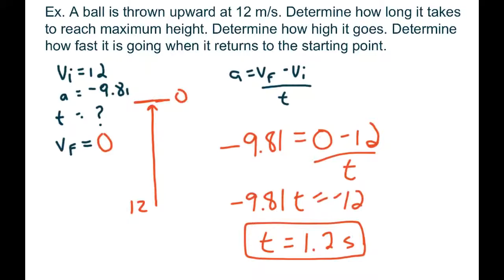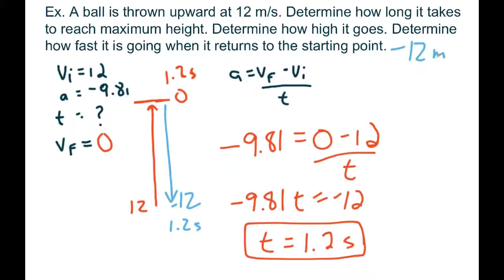If we figure out how much time it takes to fall back down, we'll get the exact same answer. The ball starts at 12 m/s, goes up, reaches a speed of 0 at the peak — that takes 1.2 seconds, which is exactly halfway through the trip. When it falls back, it starts at 0 and ends at a speed of negative 12, taking another 1.2 seconds. So it always takes the same time going up as coming down, and the return speed will be negative 12 meters per second.